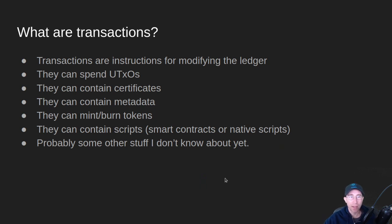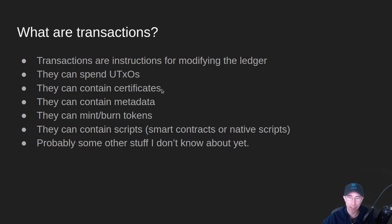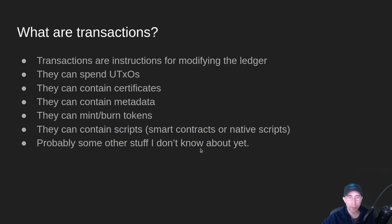Transactions — what are they? They are instructions for modifying the ledger state so that everybody agrees on who has what tokens, what ADA, etc. They can spend UTXOs. Remember from previous videos, UTXOs are the actual amounts of things that sit underneath your addresses. They can also contain certificates like a stake pool registration or a delegation certificate — like delegating to a stake pool. They can also contain metadata; all those tokens with their pictures you see on various websites are stored as metadata on the blockchain. They can also mint and burn tokens. They can contain scripts, either native scripts or smart contracts. Native scripts is one way we get native assets. And there's probably some other stuff I don't know about yet — I'm still learning along with you guys.